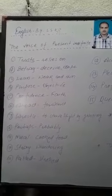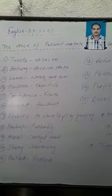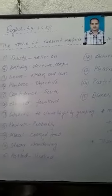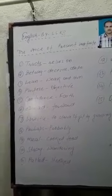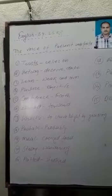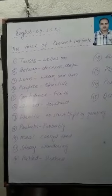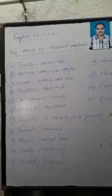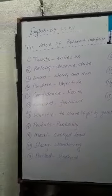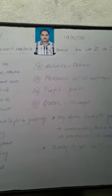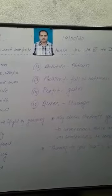Number 7: Wrestle means to strive or fight by grasping. Number 8: Perhaps means probably. Number 9: Meal means cooked food. Number 10: Astray means wandering. Number 11: Patted means stroked. Number 12: Achieve means obtain. Number 13: Pleasant means full of happiness.